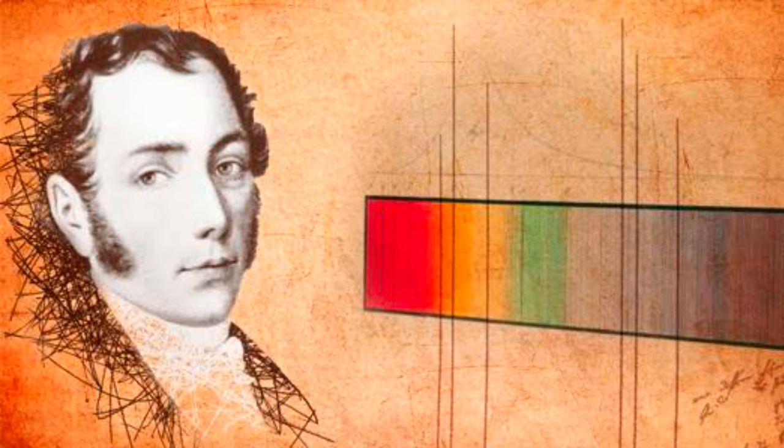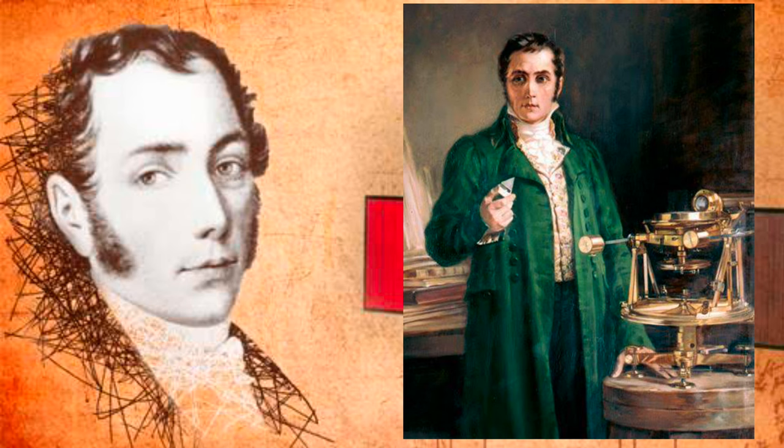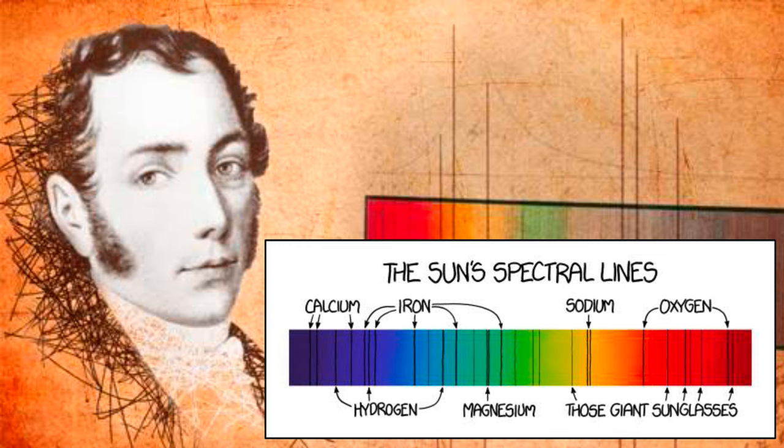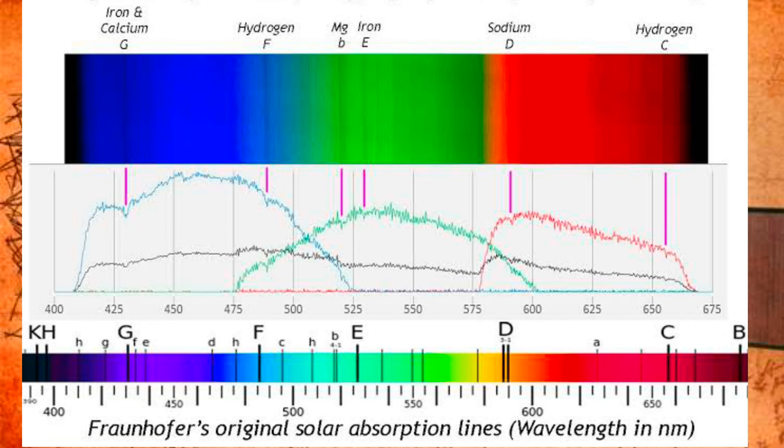Although English astronomer William Hyde Wollaston spotted these absorption lines in the solar spectrum in 1802, they were first examined in detail by German lensmaker Joseph von Fraunhofer in 1814, after whom they are named. Fraunhofer was able to identify over 500 lines, and with modern equipment, we can detect many thousands of them.